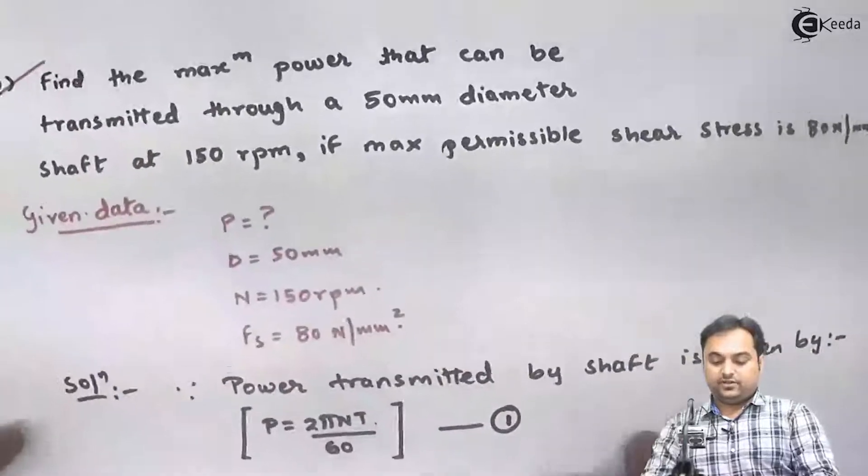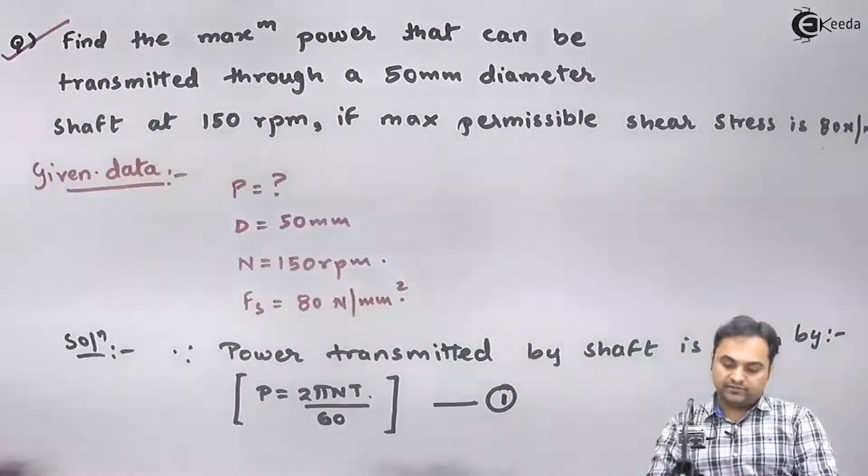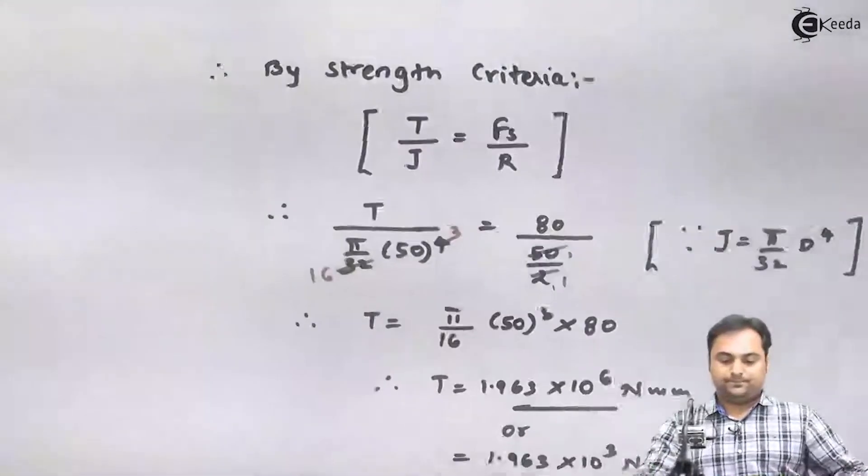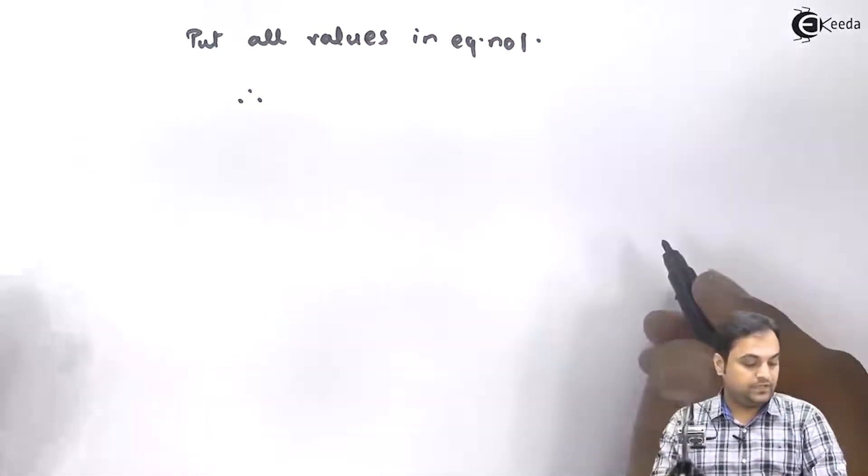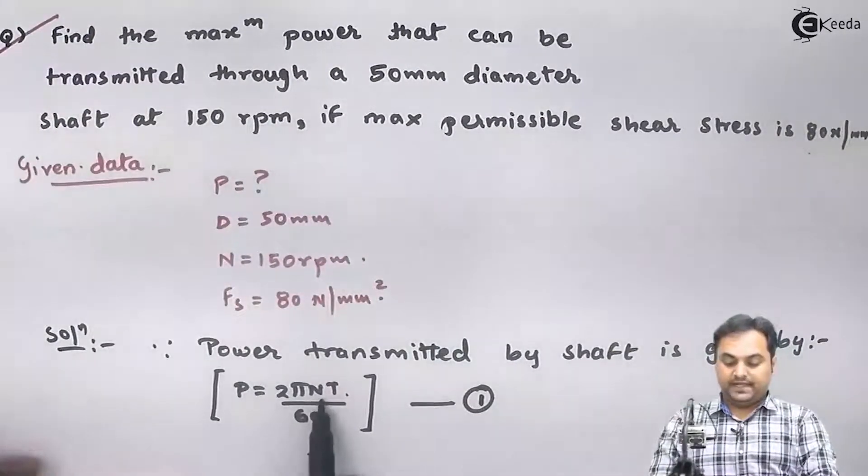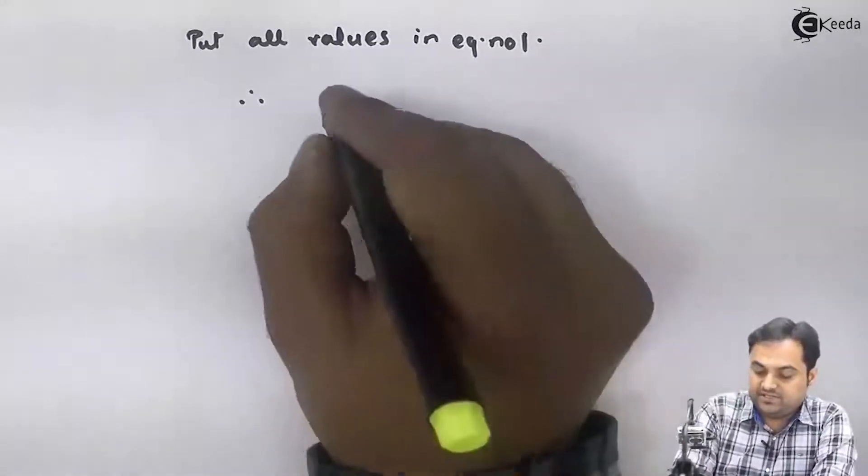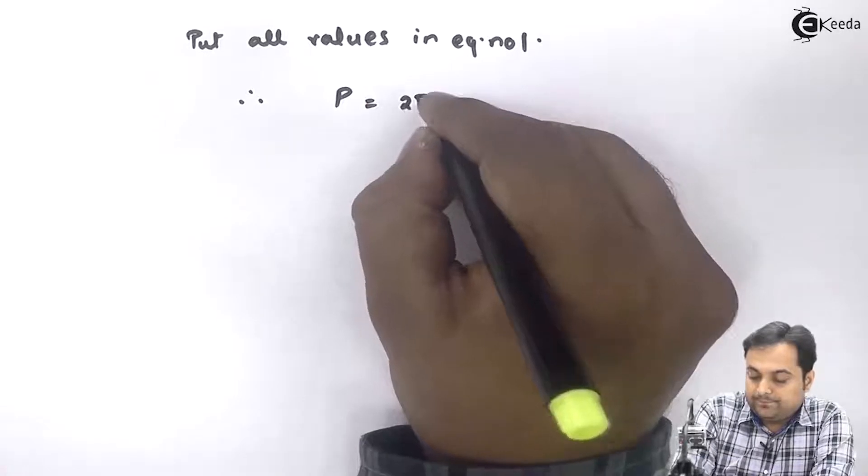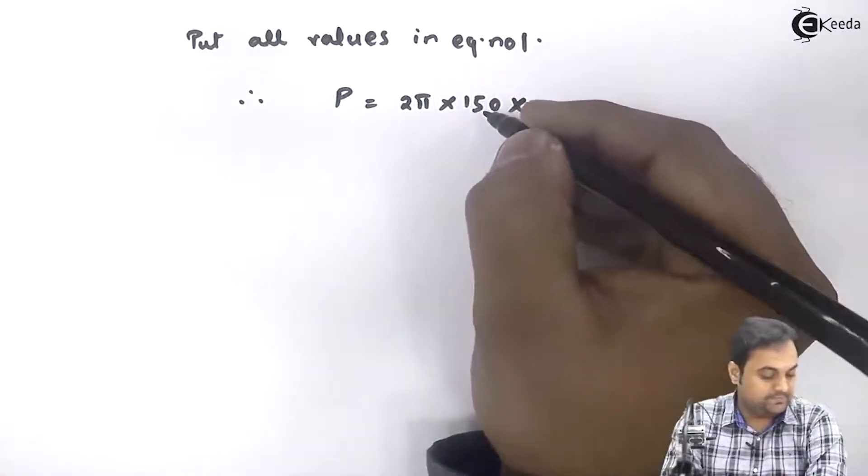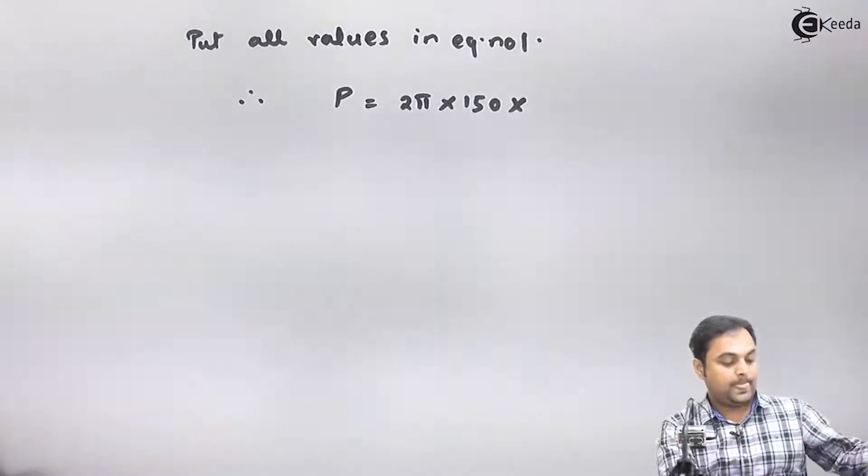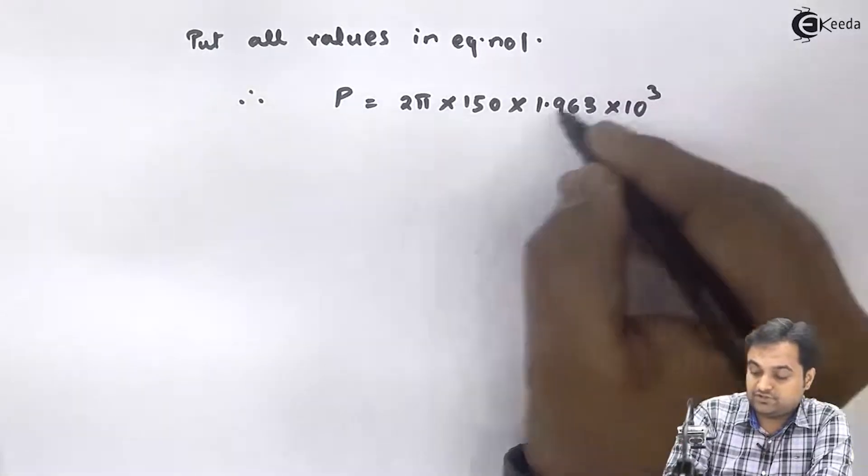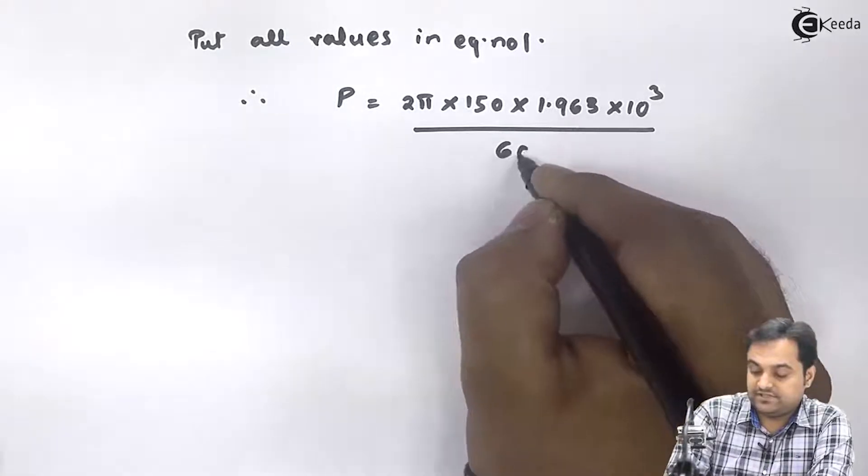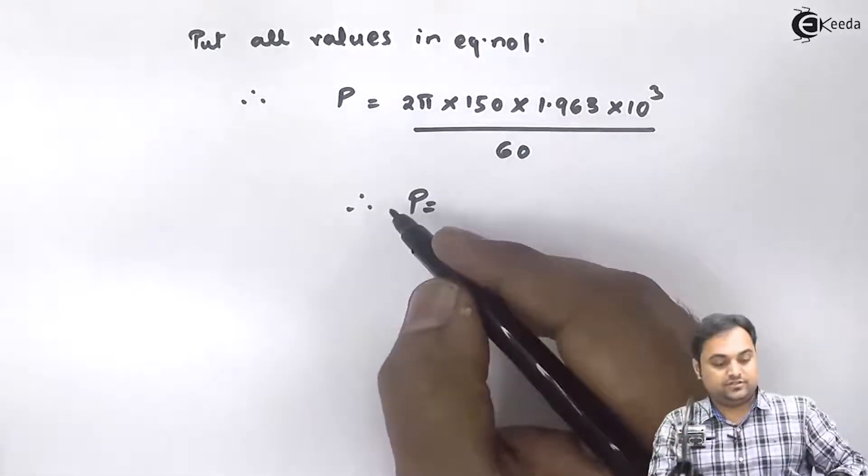So as we see in equation number one, we have found all the values. I will say put all values in equation number one. Therefore in equation one we have power P is equal to 2 pi N T by 60, so P equals 2 pi into 150 multiplied by T, the torque value which we have got is 1.963 into 10 raised to 3, divided by 60. From this I will be getting the answer of power.